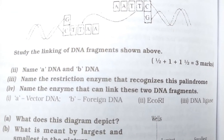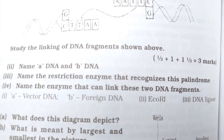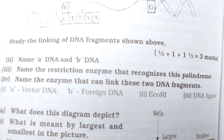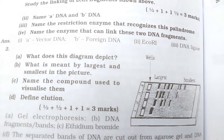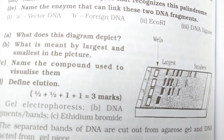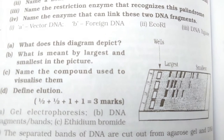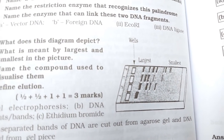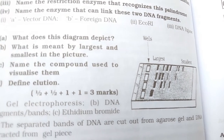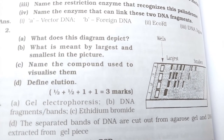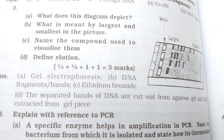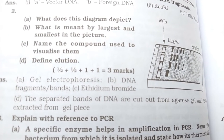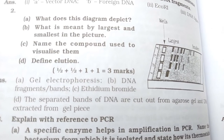The second question asks: what does this diagram depict, and what is meant by largest and smallest in the picture? Name the compound used to visualize them. The answer involves gel electrophoresis — check diagram and answers B, C, D.